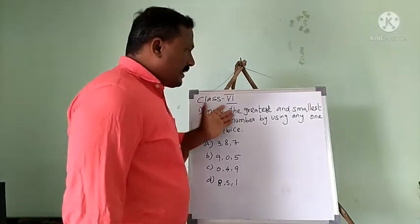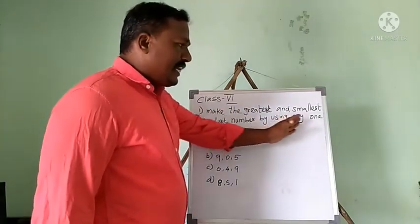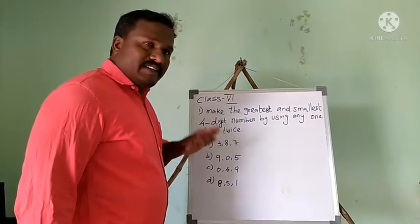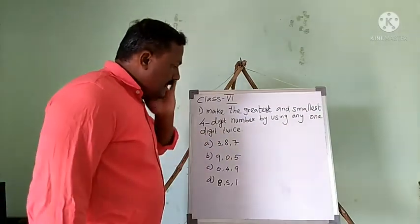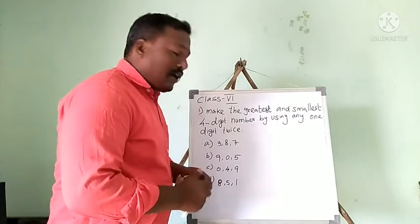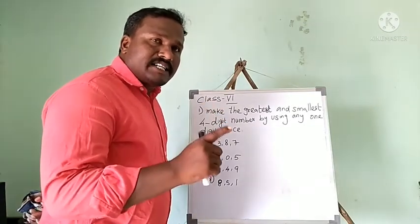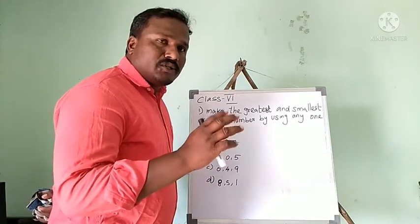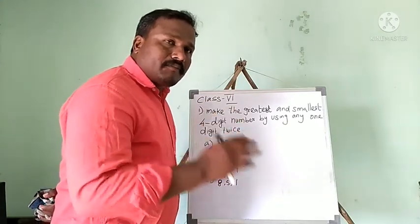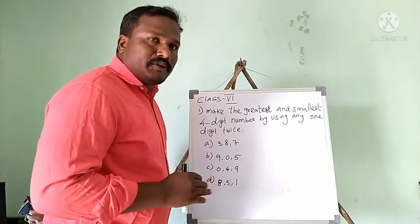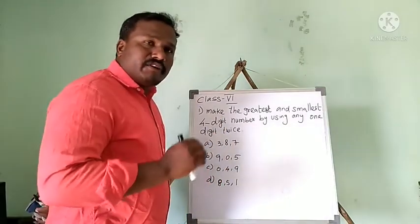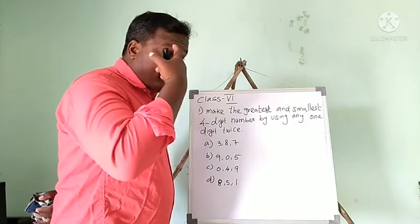The task is: make the greatest and smallest four-digit number by using any one digit twice. For example, look at the digits 3, 8, 7 — only three digits are given, but we want to make a four-digit number, so one digit must be used twice. I already told you: to make the greatest number use descending order, and to make the smallest number use ascending order. Here we need a small trick — listen carefully.